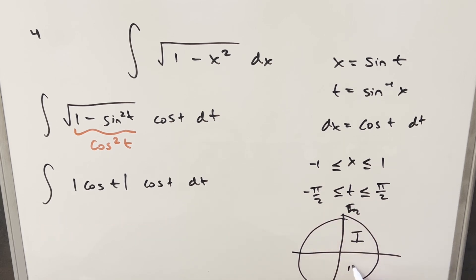Well, in this region here between minus pi over 2 and pi over 2, this is just quadrants 1 and 4. But in quadrants 1 and 4, cosine is always positive. So this is going to allow me to just remove my absolute value here. So now we can just multiply together our cosines, and we end up with cosine squared t dt.